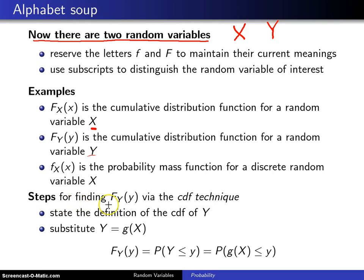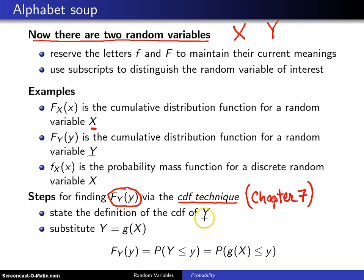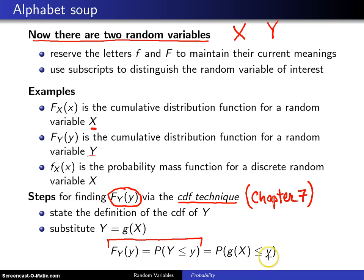Here are the steps for finding the CDF of Y using what is known as the CDF technique. More details will be given in Chapter 7 on the CDF technique, but we're just scratching the surface here. First, you state the definition of the CDF of Y. Then you substitute Y equals G of X, replacing capital Y with G of X. Finally, you do algebraic manipulation to that inequality to get X isolated. When you do, this looks like a CDF, and at that point you are on the road to finding the CDF of Y. This will be illustrated in a couple of examples on the next few slides.